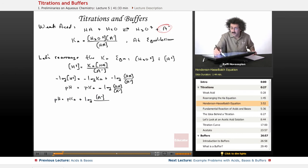The pH equals the pKa plus the log of the concentration of conjugate base, A minus, over the concentration of the actual acid itself.